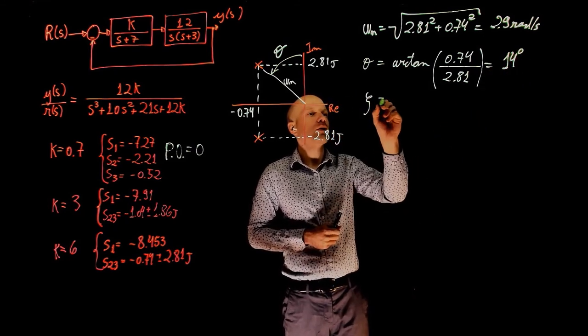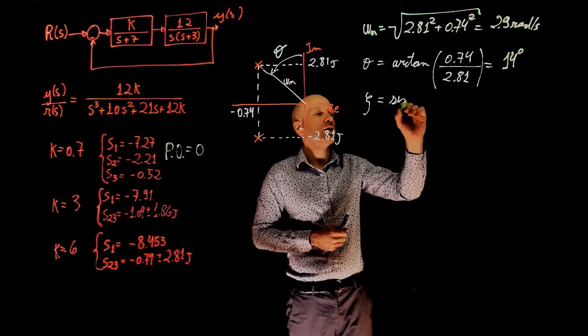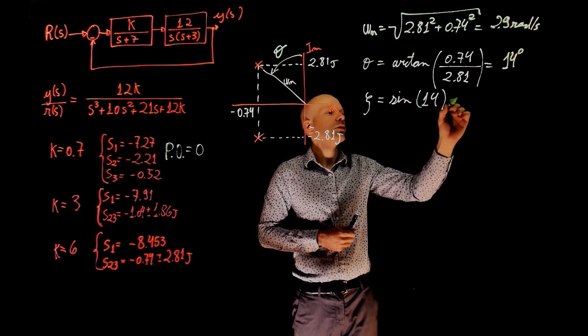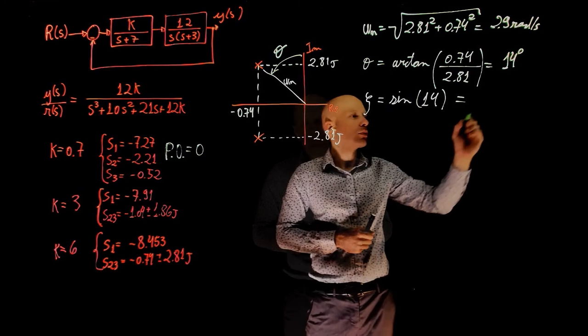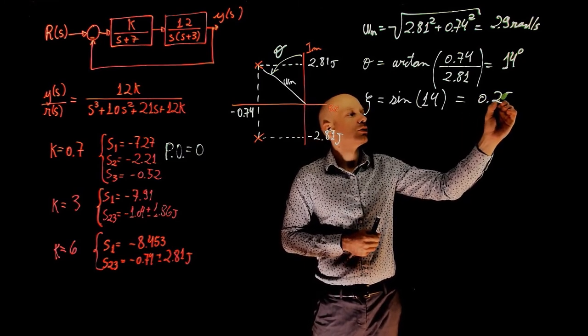Now ζ can be calculated as sine of theta, sine of 14, which is 0.25.